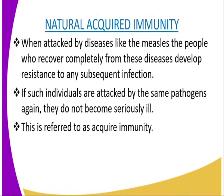There is also artificial acquired immunity, which is developed by vaccination. Once a child is born, it is advisable that you take the child for vaccination. That type of immunity is known as artificial acquired immunity.